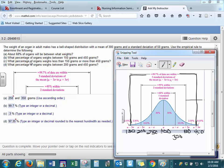Question C: what percentage of organs weighs less than 150 or more than 450? There are two different ways you can approach this.